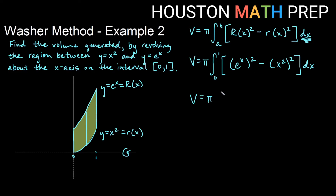Now we do the algebra before integrating. Squaring e to the x: e to the x times e to the x, using properties of exponents, becomes e to the 2x. Then x squared squared: multiplying the exponents 2 and 2 gives us x to the 4th.